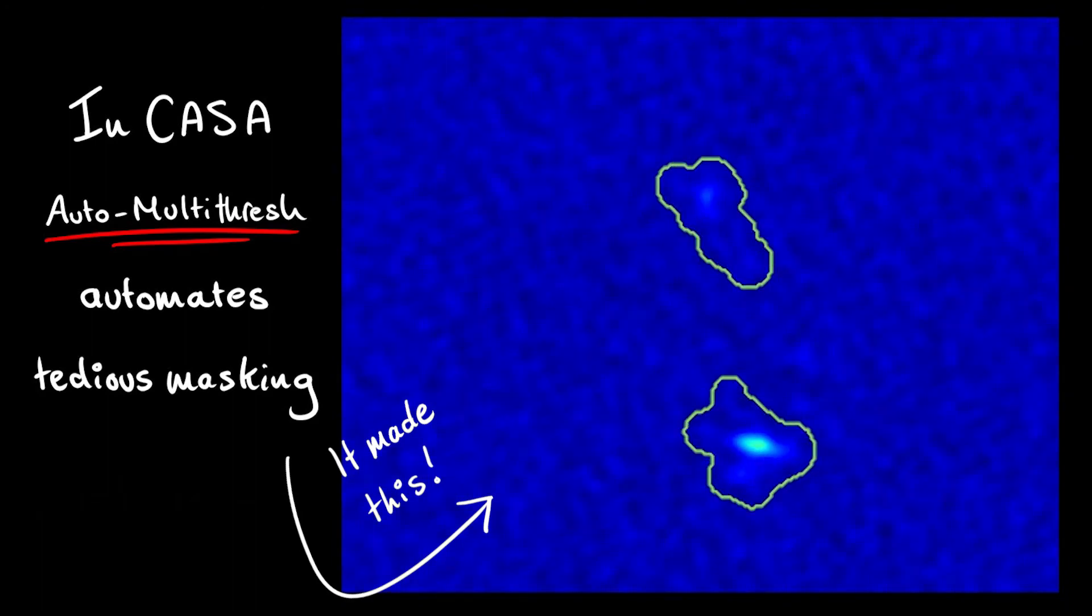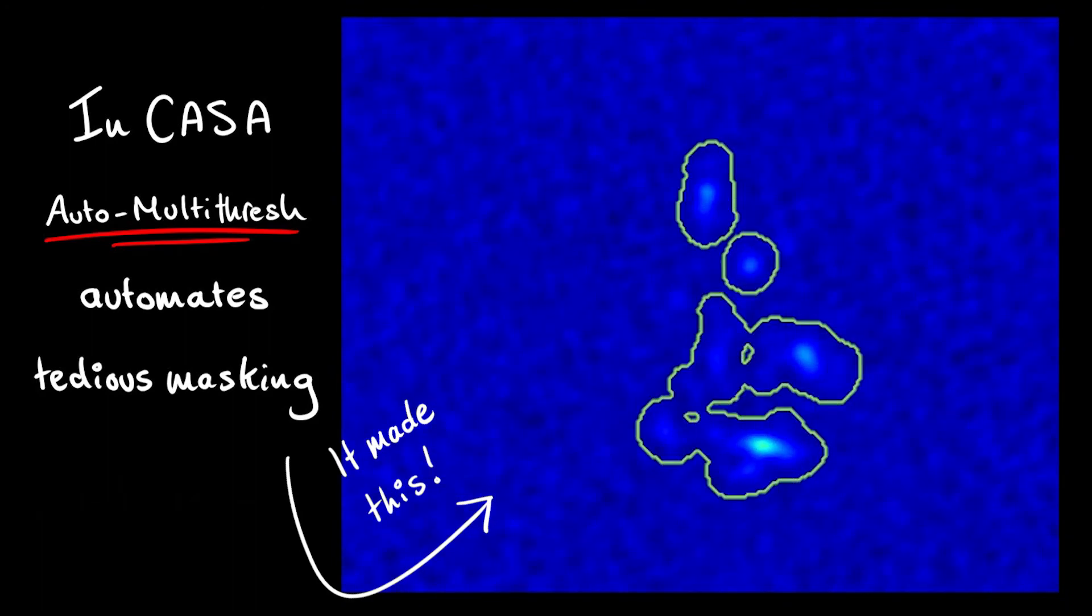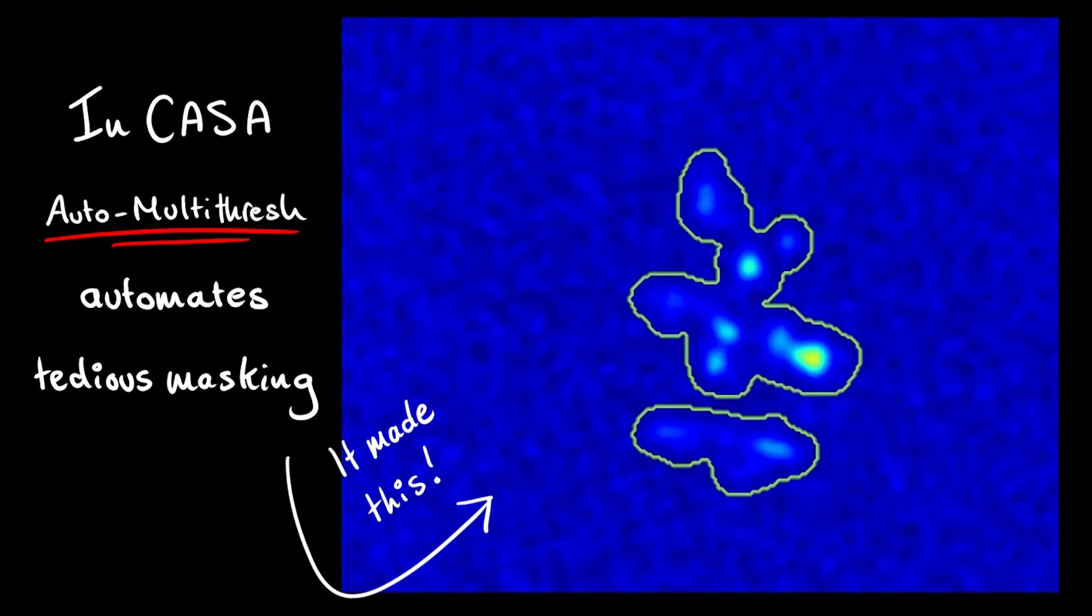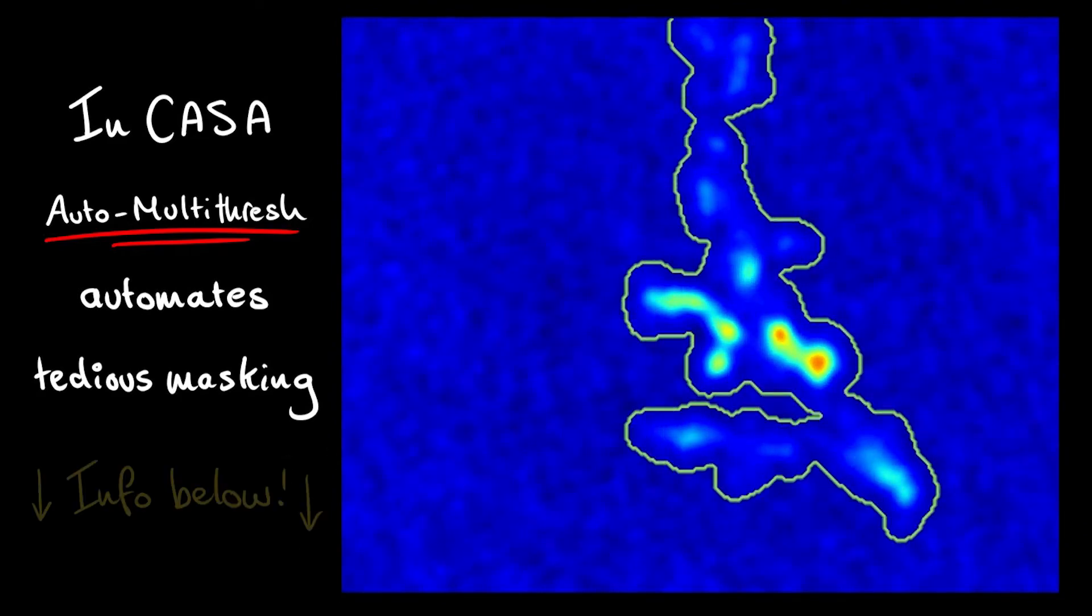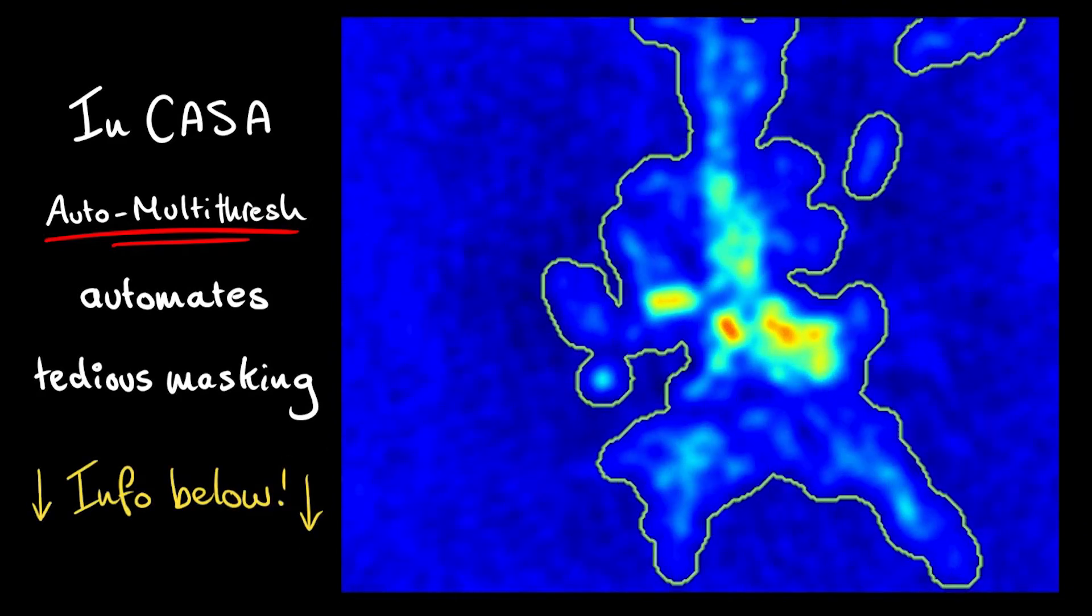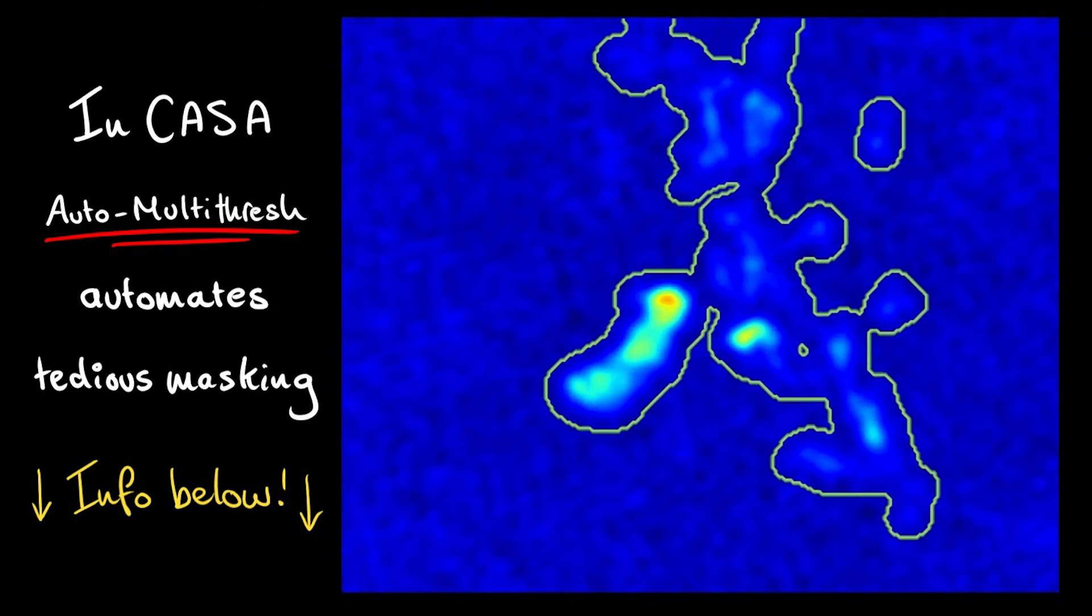This algorithm uses computer vision techniques to generate masks similar to what an experienced data reducer would do by hand. Check the comments below for links to more information if you'd like to look into using auto-multithresh.